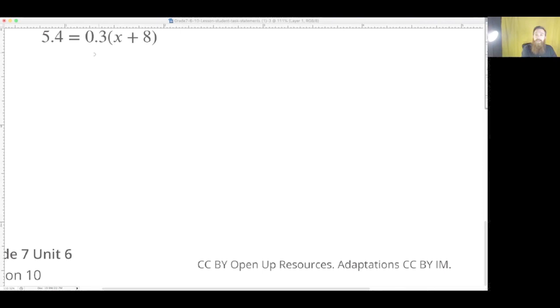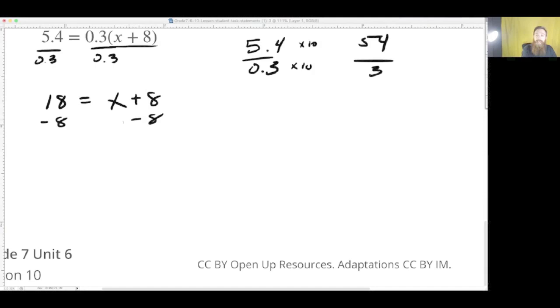So for this one, for number 5, you could use the distributive property. But what do you notice? If you ignore the decimal, this is 54 and this could be 3. So we could just divide and see that 54 divides by 3 and we get 18. All we did was move a place value over. So this is 5.4 divided by 0.3. If you multiply both by 10, you make an equivalent fraction of 54 divided by 3. And that's still 18. So divide both sides by 0.3. And that is 18 equals x plus 8. So now we subtract by 8, subtract by 8. And we see that x is equal to 10.